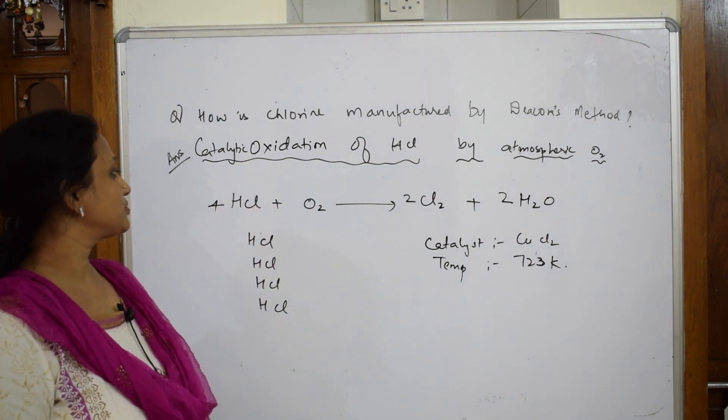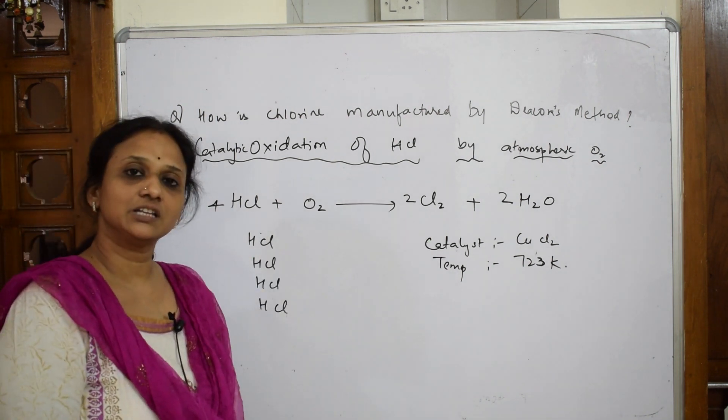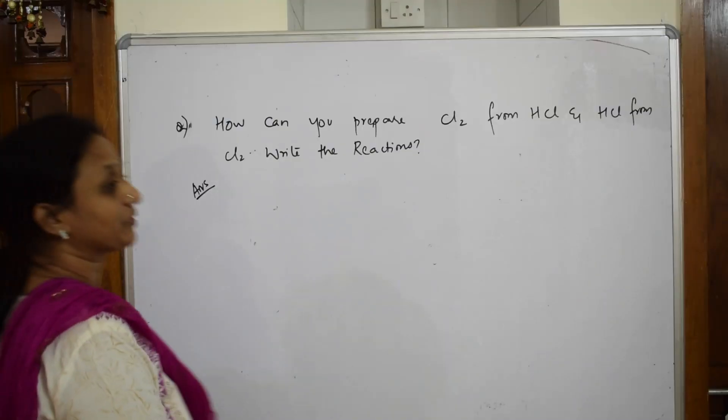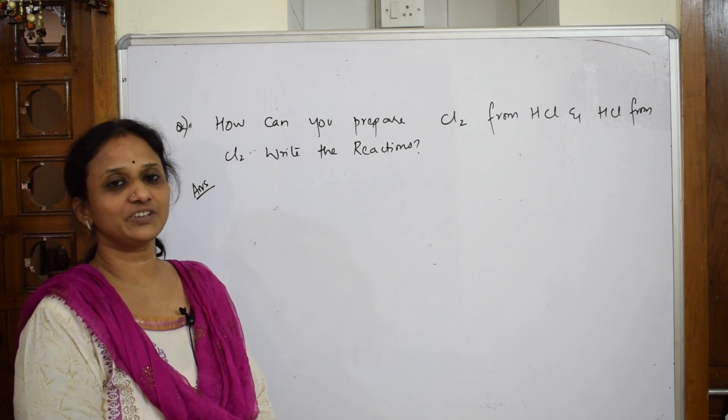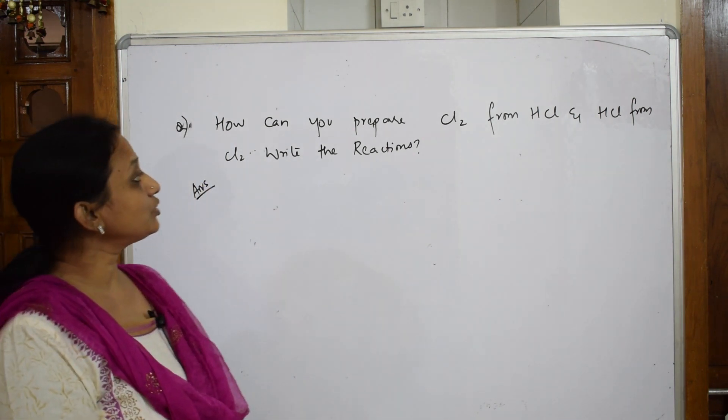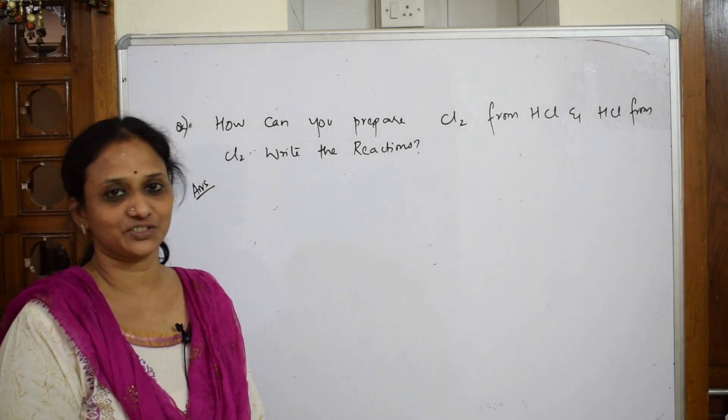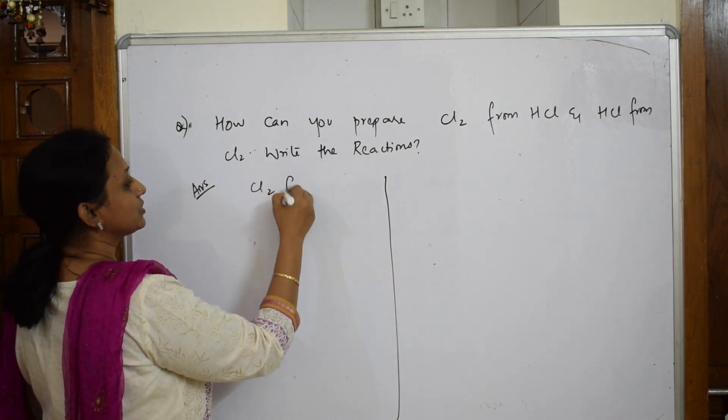So under these conditions your chlorine gas is prepared. This is your Decon's method: catalytic oxidation of HCL by atmospheric oxygen. Try to take four moles directly so it's easy to get that chlorine gas and water. Let's solve one more question related to chlorine. How can you prepare chlorine from HCL and HCL from chlorine? Write the reactions.